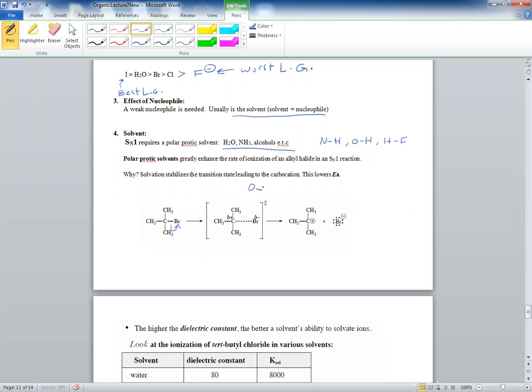Those charges need to be stabilized and there's nothing better than protic solvent molecules. Water, for example, has delta plus on it, so it's much better at stabilizing the bromide. And the O delta minus is great at stabilizing the carbocation.